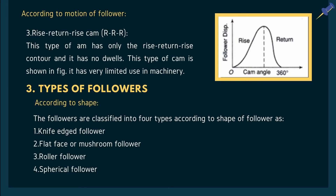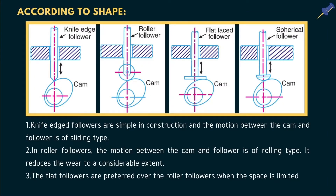There are three main classifications of followers: according to their shape or surface of contact, according to type of motion, and according to line of motion. According to shape, followers are subdivided into four classes: knife edge follower, flat face follower (also called mushroom follower), roller follower, and spherical follower. The examples based on surface of contact discussed here are all examples of reciprocating followers.